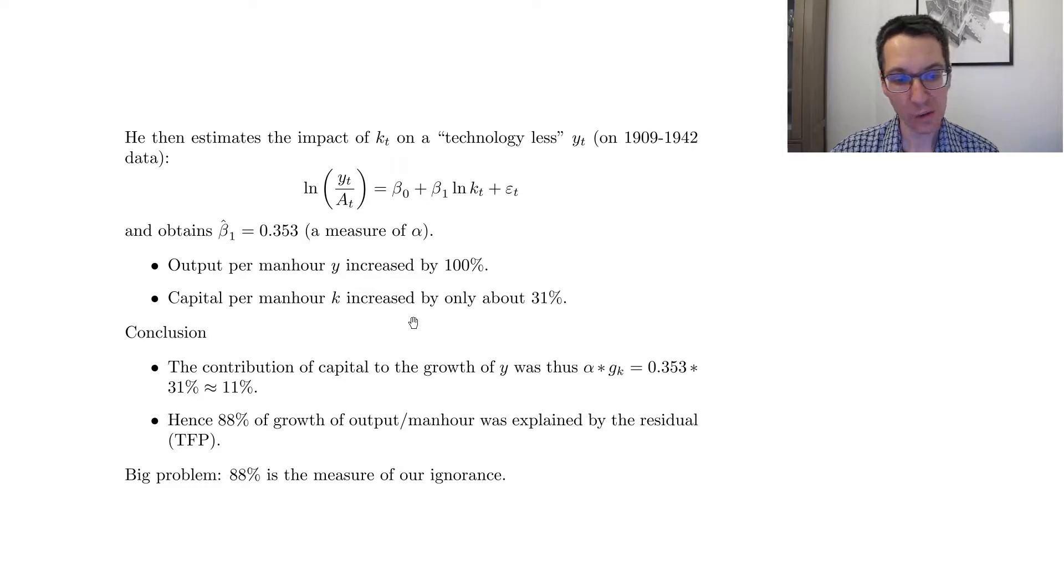So it means that basically the contribution of capital to the growth of y is simply the growth of capital multiplied by the coefficient we have just computed alpha. So it's 0.353 multiplied by 31%, so 11%. So if we didn't have a technology growth, then the output should have just grown by 11%, but it's grown by 100%. So it means that in a sense, almost everything else, so about 88% of growth of output per man hour is actually unexplained by capital. So it's purely explained by this Solow residual, this TFP growth.